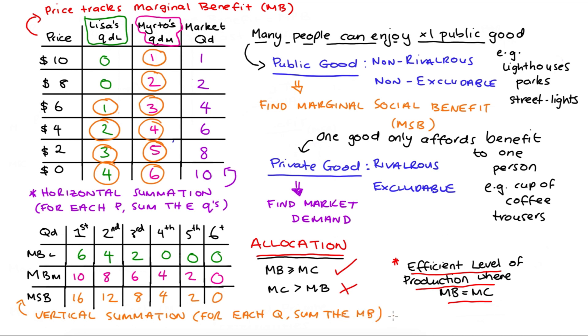It's called vertical summation because for each quantity we're adding up our marginal benefit, which is tracked by our price variable — and price is on the vertical axis when we draw our demand curves.